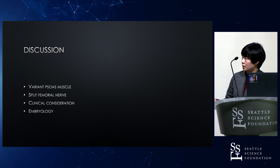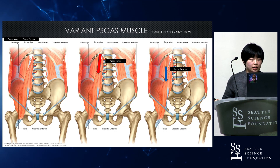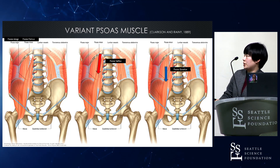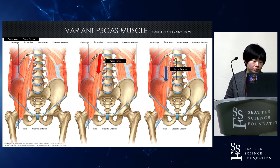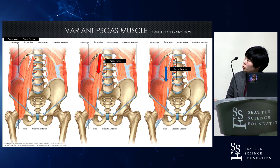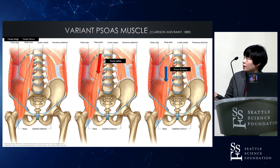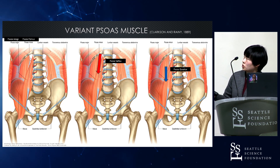In the discussion section, I will discuss the variant psoas muscle, split femoral nerve, clinical considerations, and embryology. Clarkson and Rainey proposed four psoas muscle variants. The first is psoas magnus — psoas major. The second is psoas parvus, representing psoas minor. The third is psoas tertius, representing an extra muscle slip originating from the 12th rib contributing to the psoas major. The fourth is psoas coartus, which is our case — it has an extra muscle slip originating from the quadratus lumborum to the psoas major.